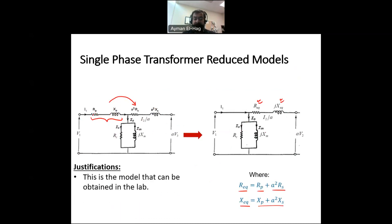Now, what is the justification? The first and the most important justification is that when we do the measurement in the lab, that's what we can get. We find R equivalent, X equivalent, RC, and XM. So we can find only R equivalent and X equivalent. We can't find R1 by itself and R2 by itself. So that is the first justification.